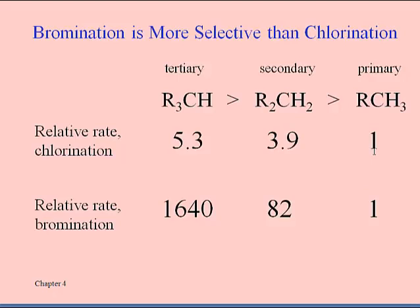There's less of a preference for the primary because the corresponding primary radicals are not as stable. For bromination, the tertiary bromide has an enormous preference over secondary, and even secondary compared to primary is 82 to 1. Notice how much of a preference difference that is compared to chlorine.